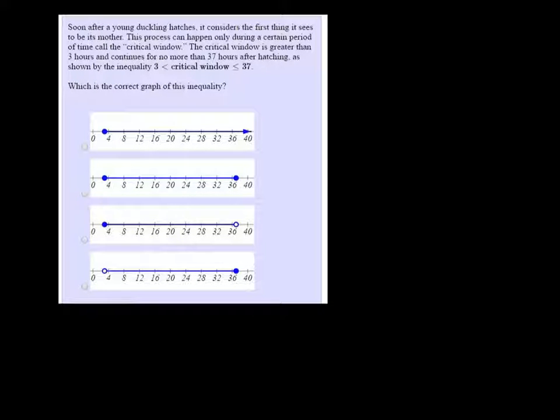Soon after a young duckling hatches, it considers the first thing it sees to be its mother. This process can happen only during a period of time called the critical window.